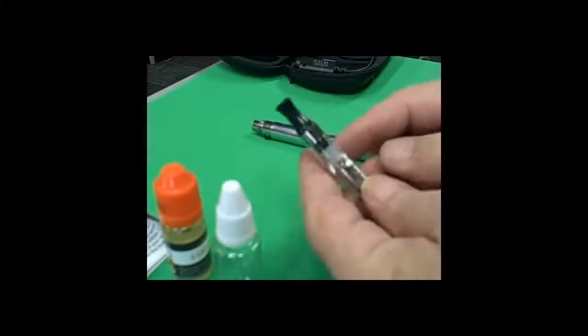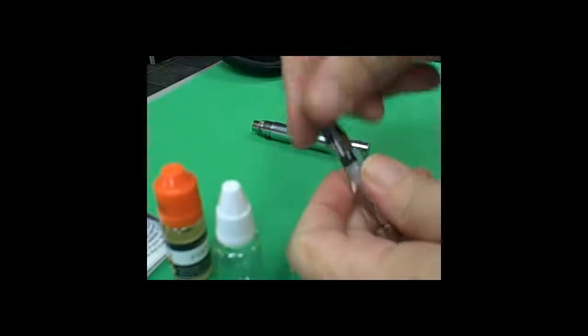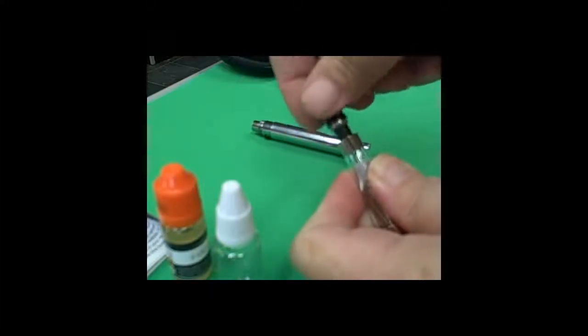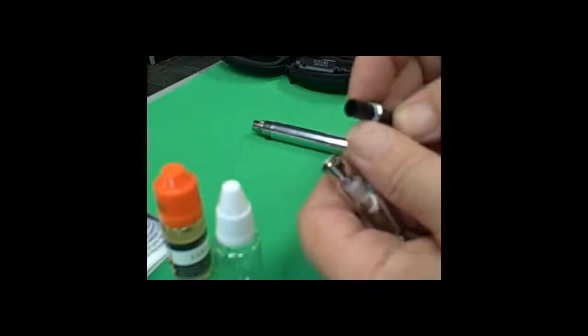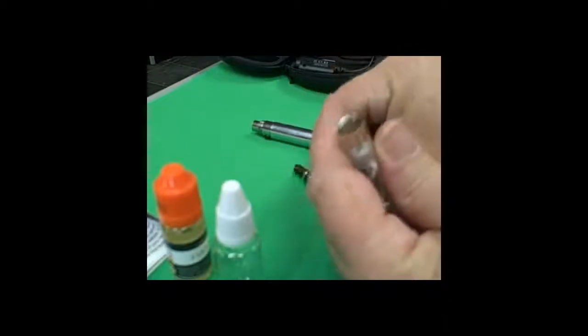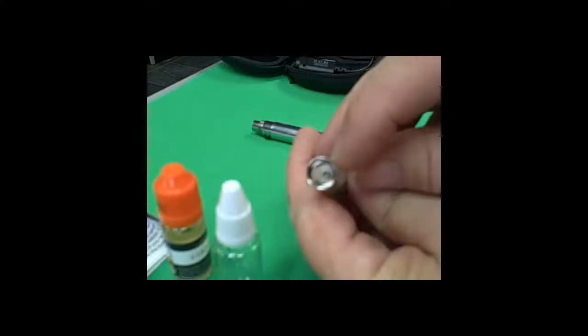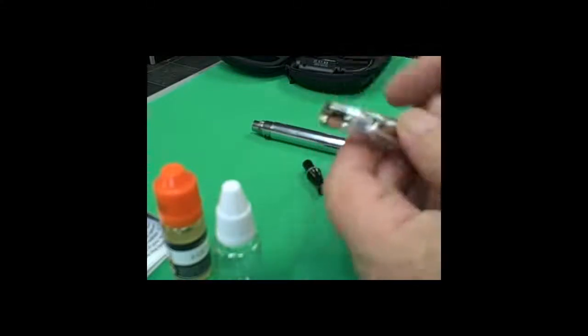Now, you'll notice with this cartomizer, the top is, you just unscrew it. It's finger tight. And as you take it off, notice there is a little O-ring here. And you want to make sure that O-ring stays there so that it doesn't leak. If you look inside, you'll see in the very center of the hole, there's a smaller hole. That's your airway. And you want to avoid your juice going down that airway.